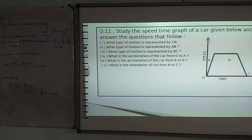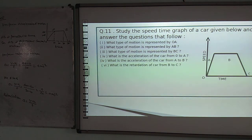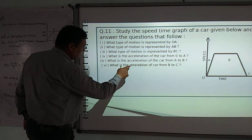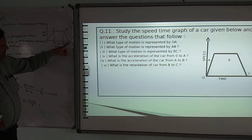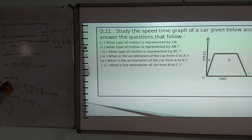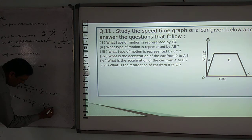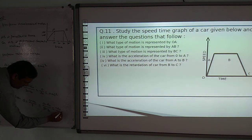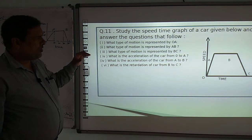The last question asks for the retardation from B to C. Note: when we write retardation, we do not put a minus sign with 'a'; if there is a minus sign, we still write it as acceleration. The final speed at point C is 0, and calculation gives a = −2 metres per second squared.